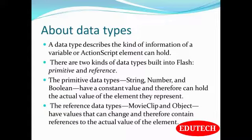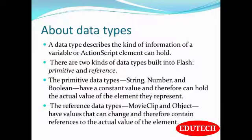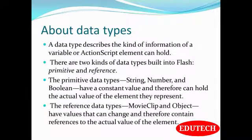What is a data type? A data type describes the kind of information a variable or ActionScript element can hold. There are two kinds of data types built into Flash: primitive and reference. The primitive data types are string, number, and boolean — they have constant values and hold the actual value of the element they represent. The reference data types — movie clip and object — have reference values that can change and therefore contain references to the actual value of the element.